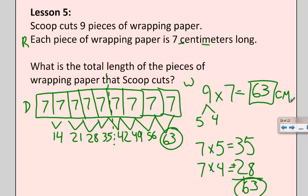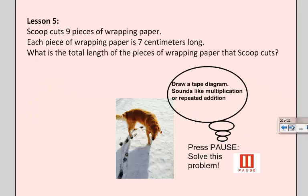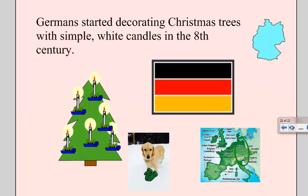Let's see what Scoop thinks. So actually today we're going to talk about a Christmas tradition. Germans started decorating Christmas trees with simple white candles in the 8th century. Now to me it doesn't sound too smart putting fire on a tree, so that's probably why we have ornaments the way we do now.